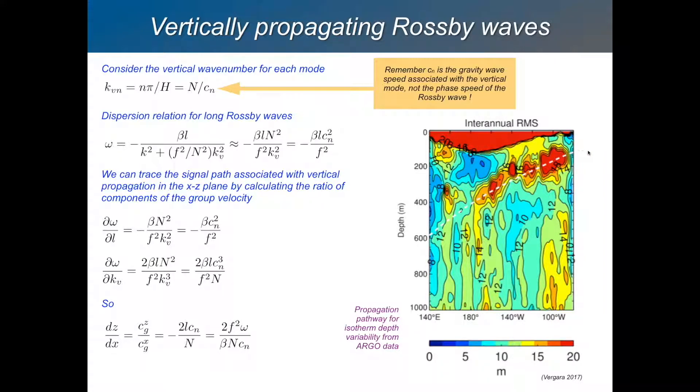So here is a picture of a ray which has been traced showing the propagation of a perturbation to the thermocline depth, giving evidence, this is observational evidence, of vertically propagating Rossby waves.